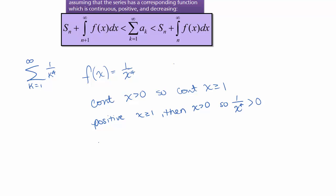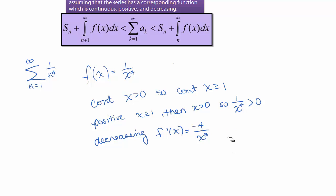And is it decreasing? That's the one we actually have to do a little work to check. We're going to look at f prime of x. We're looking at x to the negative fourth, so f prime of x equals negative 4x to the negative fifth. Is that always negative? Yes, it is. The numerator is always negative and the denominator is always positive, because we're taking a positive number and raising it to the fifth power. So yes, this is always negative. Therefore, our corresponding function 1 over x to the fourth is decreasing.